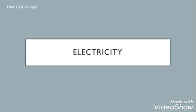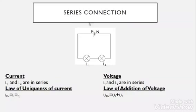The student today should be able to know the laws of series connection. We have a dry cell, which means a battery, connected in series to lamp one and lamp two. In series means that they are connected beside each other, so the dry cell is connected in series to lamp L1 and lamp L2.